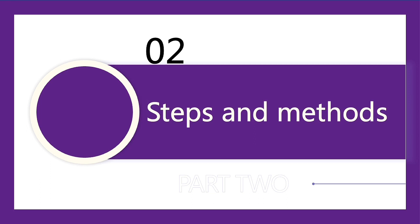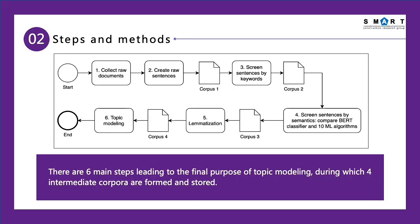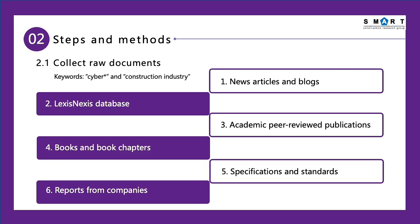The next section is our methodology. There are six main steps leading to the final purpose of topic modeling, during which four intermediate corpora are formed and stored. We collect raw documents from six resources with the keywords cyber and construction industry. The six sources are news articles and blogs from the LexisNexis database, academic peer-reviewed publications, books and book chapters, specifications and standards, and reports from companies.